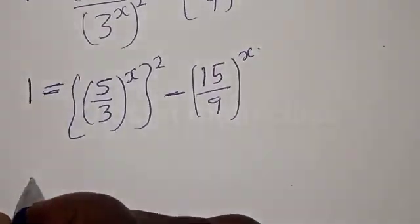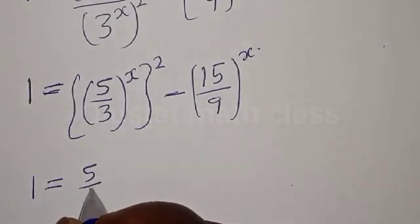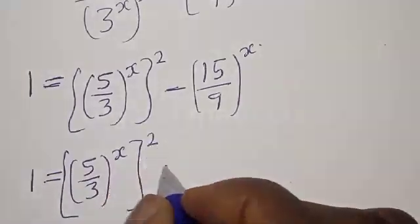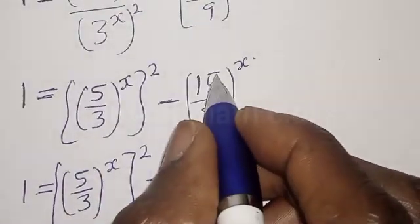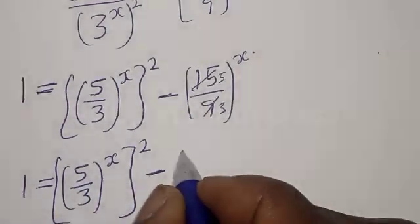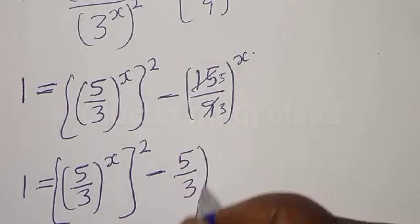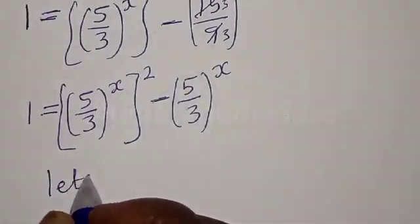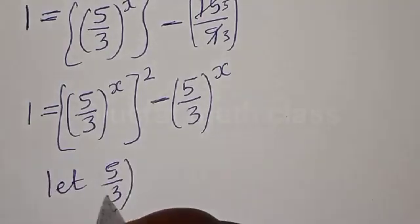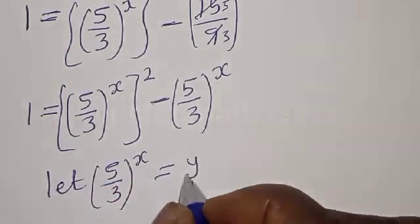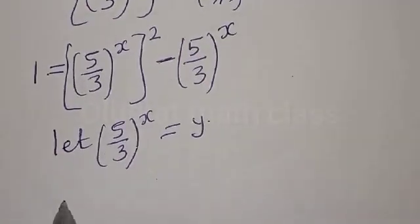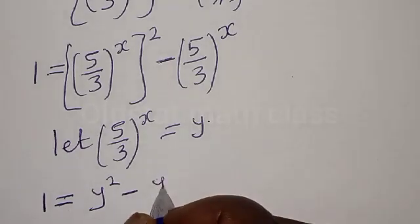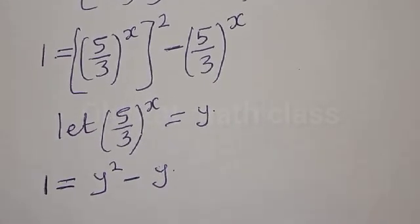This is the same thing as 1 is equal to 5 divided by 3, all raised to power s, all squared, minus 5 divided by 3, all raised to power s. At this point we say: let 5 divided by 3, raised to power s, be equal to y.